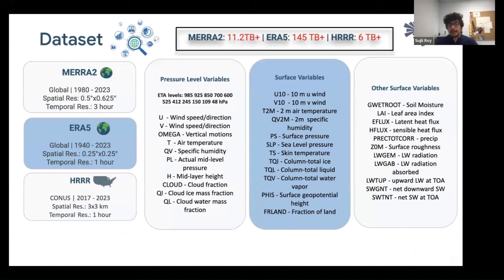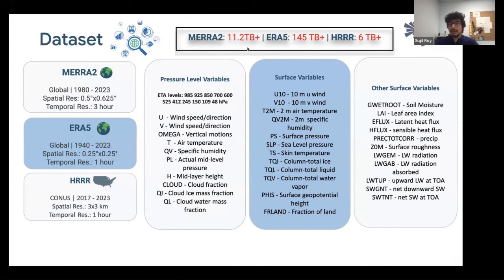For datasets, we are looking at MERRA-2 with 3-hour temporal resolution at 50×60 km spatial resolution, ERA5 at 25×25 km from 1940 to present at 1-hour temporal resolution, and HRRR which is 3×3 km but only available over the US CONUS region. Total volumes: MERRA-2 is 11.2 terabytes, ERA5 is 145 terabytes, and HRRR is 6 terabytes. The question is: can we design a model trained on one dataset that can easily adapt to other datasets, saving time on training individual models?